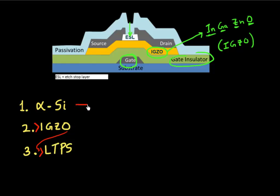So amorphous silicon mobility maxes out at one or two centimeter square per volt second. IGZO gives you mobility around five and maximum of ten. And low temperature polysilicon, it gives you on an average mobility of around 60, but it ranges between 50 to 100 centimeter square per volt second.